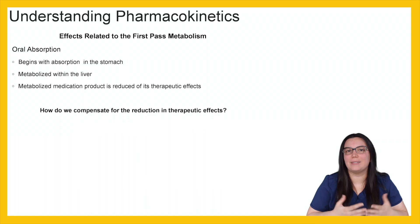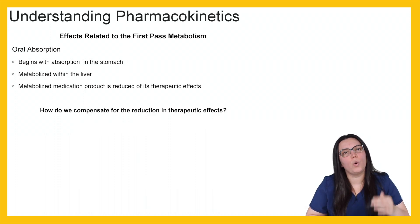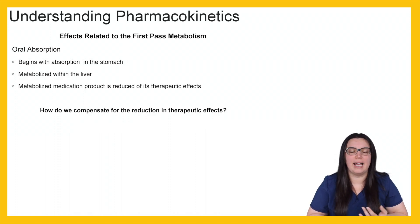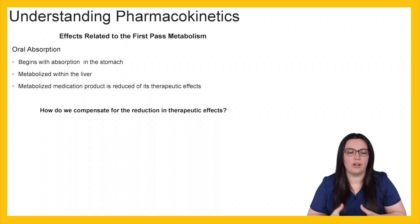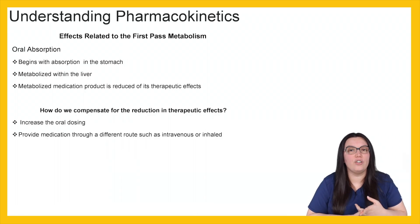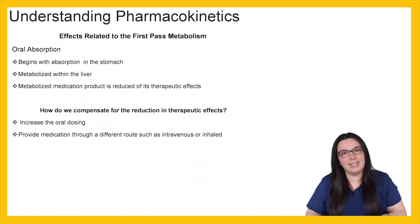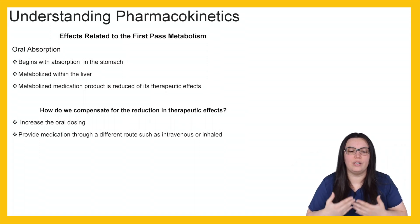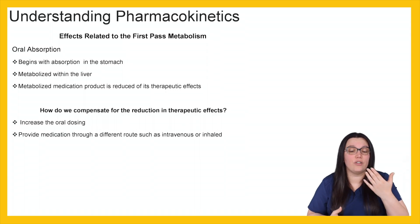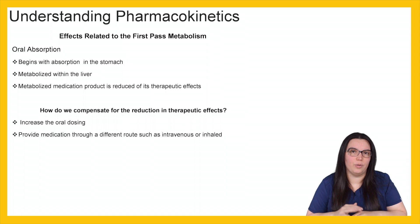Let's talk about that first pass metabolism phenomenon. With oral absorption, we swallow a medication, it begins absorption in our stomach, and it's metabolized within the liver — that metabolized medication product is reduced to its most therapeutic effects. To compensate for this reduction, we can either increase the oral dosing of the medication, or provide the medication through a different route such as intravenous or inhaled. Sublingual medications take a different route as they are not swallowed but absorbed into the mucosal membrane.